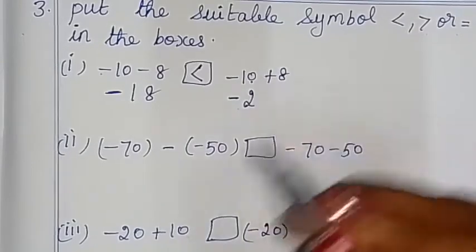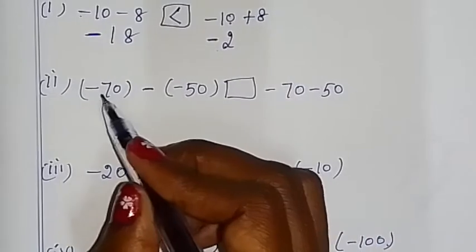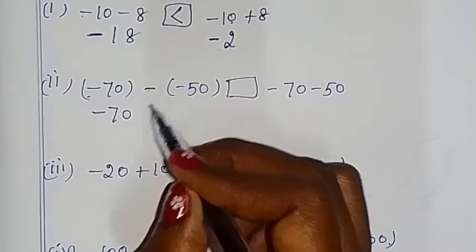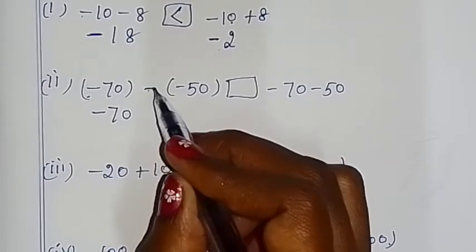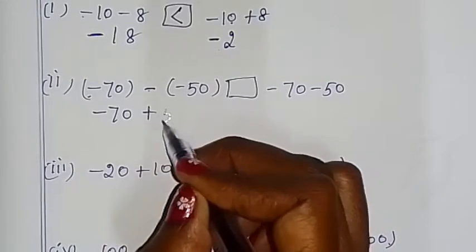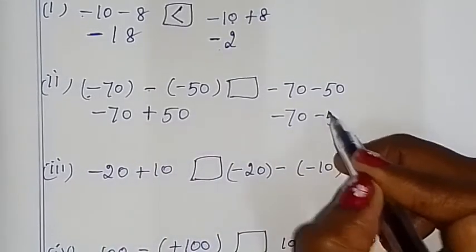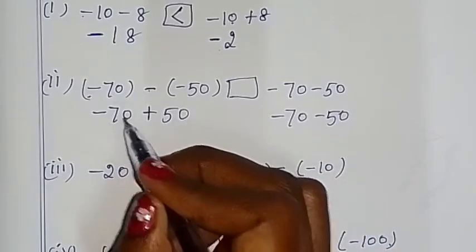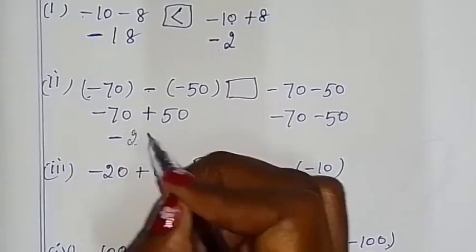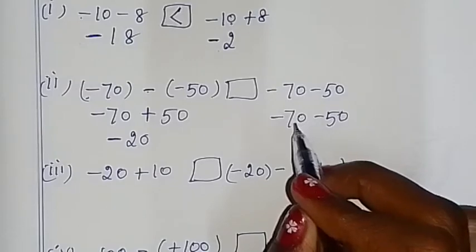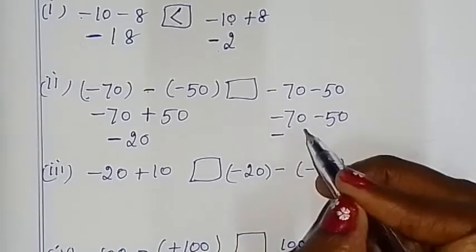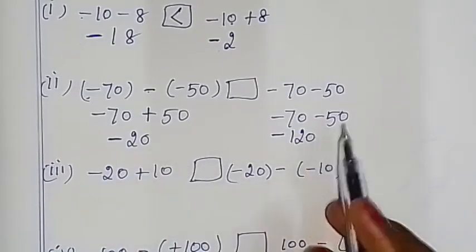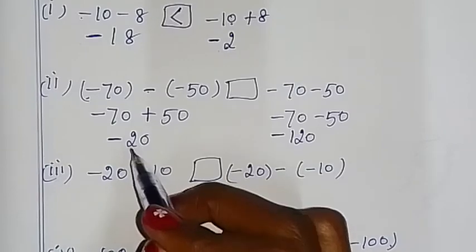Now: minus 70 — same symbol. First one symbol is the same. Integer multiplication rules: minus × minus = plus, so plus 50. Now it is minus 70 minus 50 — two different symbols, subtract, greater number symbol is 70. So subtract: the negative side is greater — open the symbol on that side.